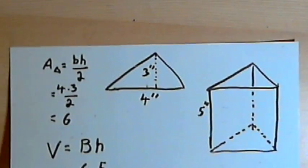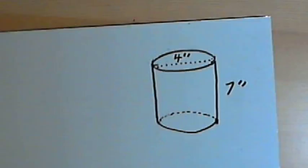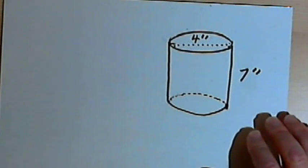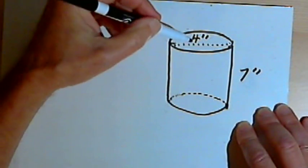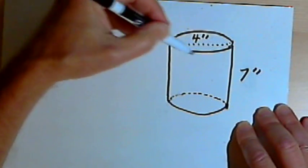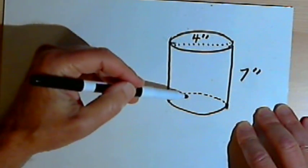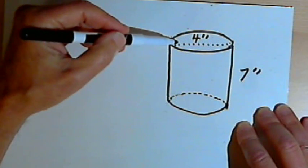Let's see how this works for a cylinder. So I've got a cylinder here. The height of the cylinder is 7 inches, and the circle that forms each of the bases has a diameter of 4 inches.